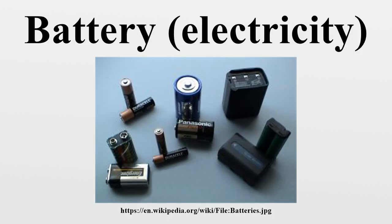The oldest form of rechargeable battery is the lead-acid battery. This technology contains liquid electrolyte in an unsealed container, requiring that the battery be kept upright and the area be well ventilated to ensure safe dispersal of the hydrogen gas it produces during overcharging.